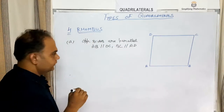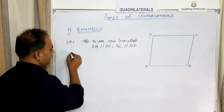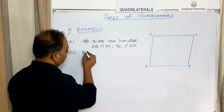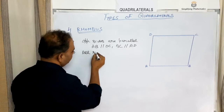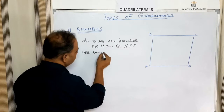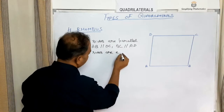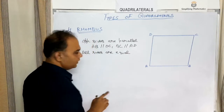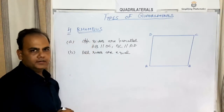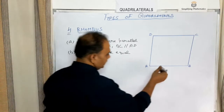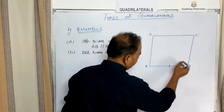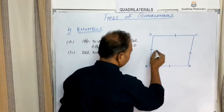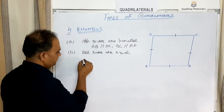The second property of a rhombus is that all sides are equal — AB equals BC equals CD equals DA.